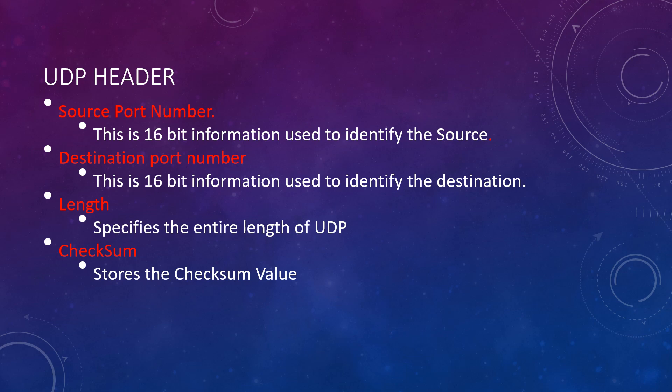The next parameter is length. The length field specifies the entire length of the UDP, or User Datagram Protocol, including the header. It is a 16-bit field and the minimal value is 8 bytes, which is the size of the header itself. The last parameter is checksum.